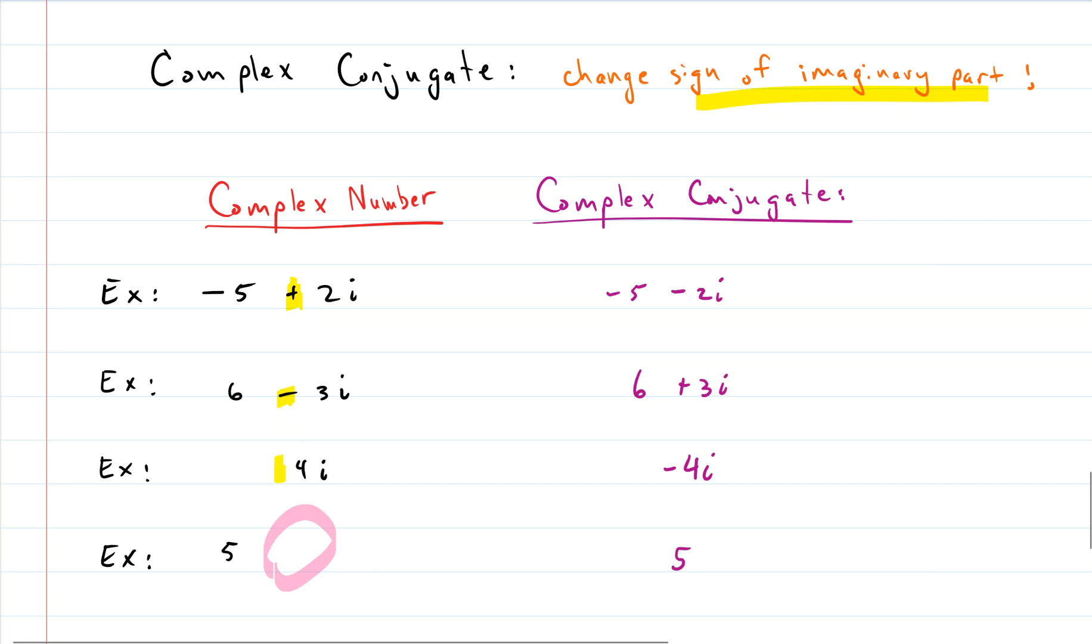So for a complex number that just has the real part, that real part is its complex conjugate. So it is its own complex conjugate. Kind of cool, huh?